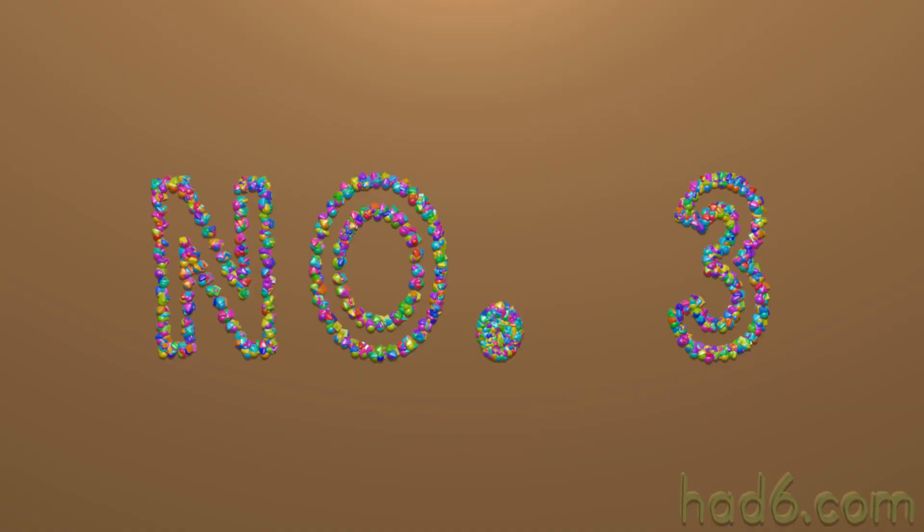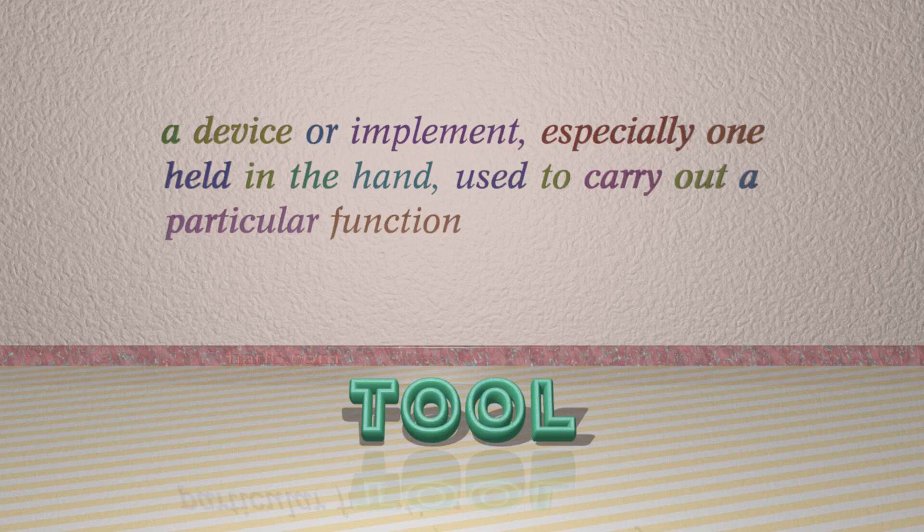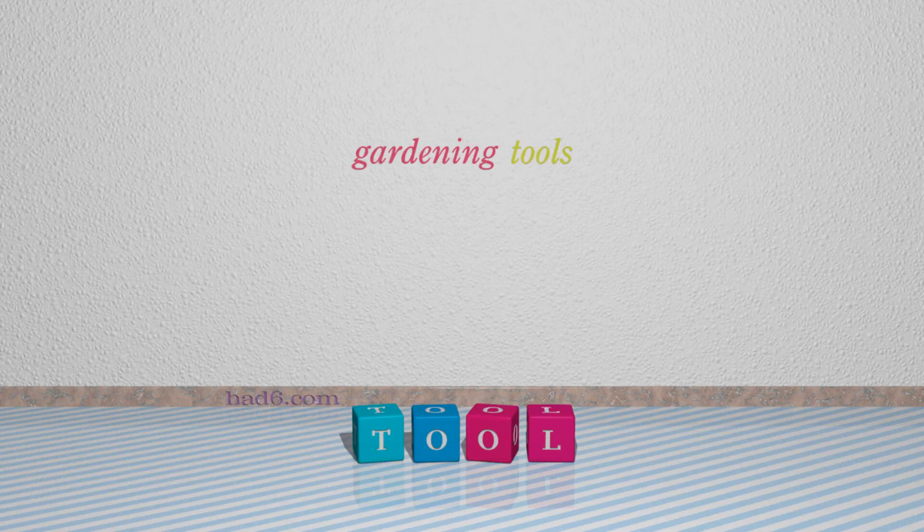Number 3: Tool — which means a device or implement, especially one held in the hand, used to carry out a particular function. For example: gardening tools.